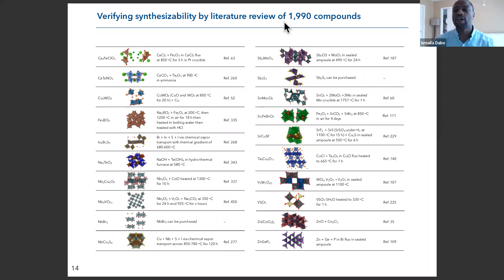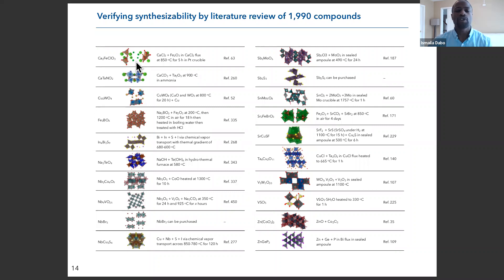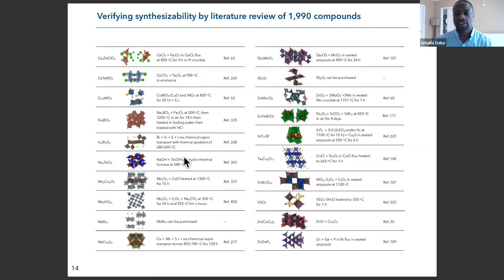We screened 2,000 compounds based on criteria of stability, solar compatibility, and compatibility in terms of redox potentials. For each of those compounds, we wanted to check whether they have been made previously in the literature. For that, we turned to our colleague Reshak in chemistry, an expert in inorganic solid-state synthesis, who went through the heroic task of checking which of the 2,000 compounds had been previously made and which had not yet been reported.